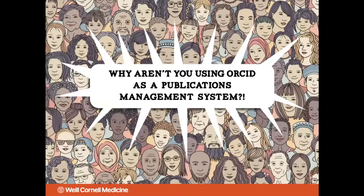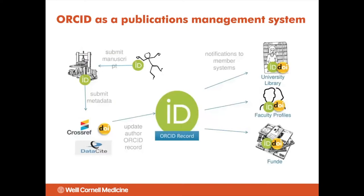Many of you might be wondering why we have a separate system when there's a perfectly good one in ORCID. First, a brief description of ORCID. ORCID is a system that mints identifiers for scholars, and these identifiers are tied to the scholars' publications. At the time of publication, a scholar submits their manuscript and provides their ORCID identifier, and then the metadata associated with that article is supplied to an aggregator like Crossref. Crossref sends the data back to ORCID, where ORCID then syndicates the data to downstream systems.